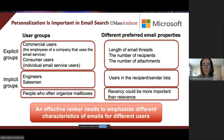Besides the explicit user groups such as commercial or consumer users, there may exist other implicit user groups. In contrast to engineers, salesmen are more likely to retrieve emails that have them as senders than recipients.